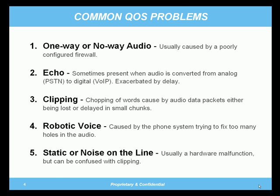Static or noise on the line is usually a hardware malfunction, but it does get confused with clipping. If you're clipping a very small section, it might sound like static or noise — some people describe clipping as a popping sound on the line. True static is always introduced when the call is analog; it cannot be introduced when the call is in its digital format traversing the internet. Digital service must be decompiled for static to be pushed in, then recompiled — so that's not possible. Static comes from whichever end is analog: typically the handset on a VoIP system or the PSTN end. If you're looking at the digital side of the service for static, you're wasting time — look at the analog sides.